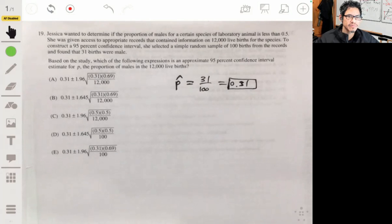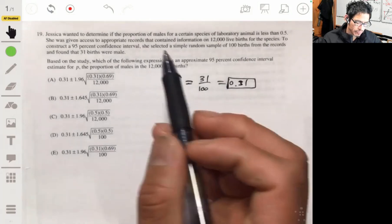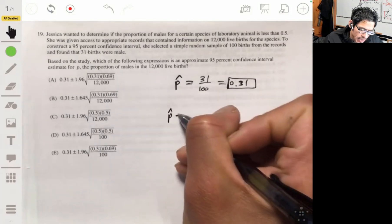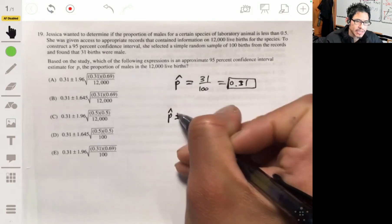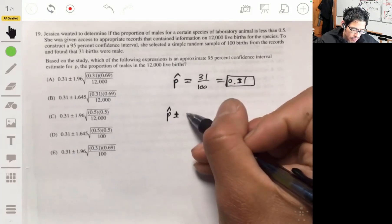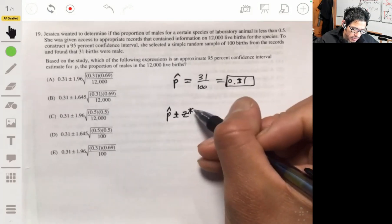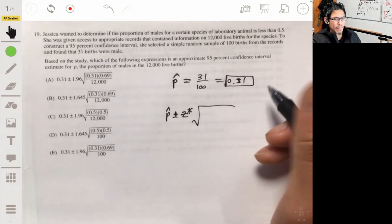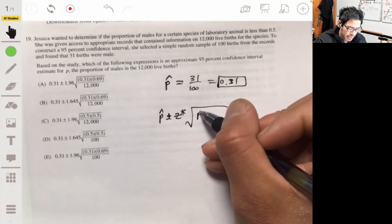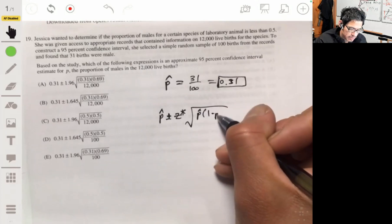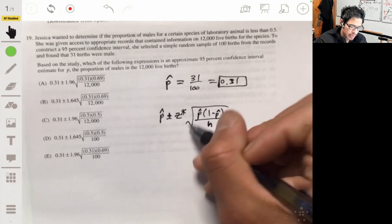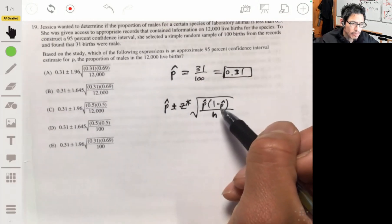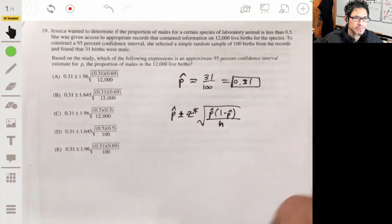Now for a confidence interval, when we have a sample of proportions, we're going to have it centered at P-hat. And then we're going to add and subtract our margin of error, which will be equal to Z-star, which is our critical value, times the standard deviation or the estimator, which is going to be given as P-hat times one minus P-hat over n. And that's all going to be square rooted like this.